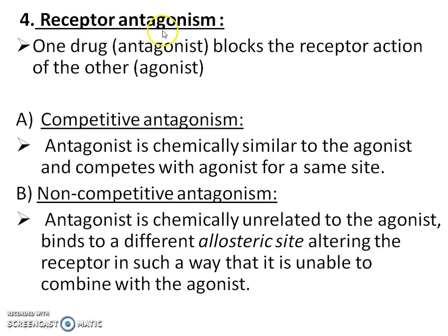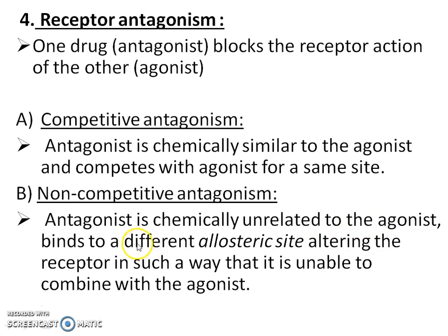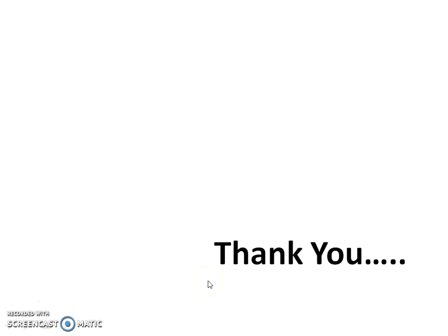In receptor antagonism, one drug — the antagonist — blocks the receptor action of the other drug, the agonist. Receptor antagonism is classified as competitive and non-competitive antagonism. In competitive antagonism, the antagonist is chemically similar to the agonist and competes with the agonist for the same binding site. In non-competitive antagonism, the antagonist is chemically unrelated to the agonist and binds to a different allosteric site, altering the receptor such that it is unable to combine with the agonist.